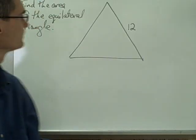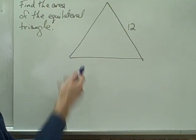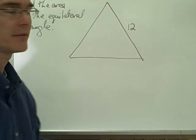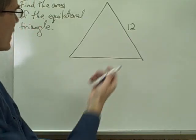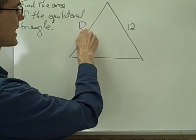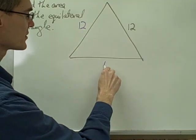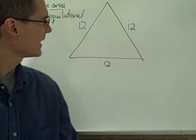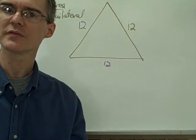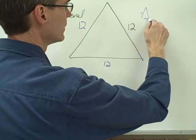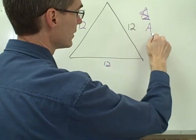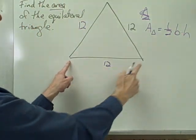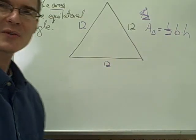Let's say we had a problem like this one: find the area of the equilateral triangle. I have a picture of an equilateral triangle and I'm given the length of one side as 12. Since it's equilateral, I know all three sides are also 12. But I'm looking for the area, and the area of a triangle is one-half base times height. I have the base — that's 12 — but I don't have the height.